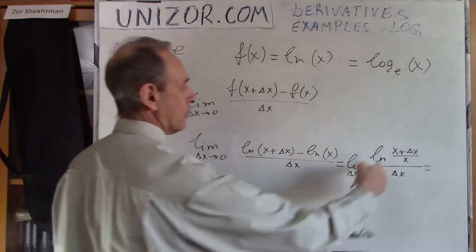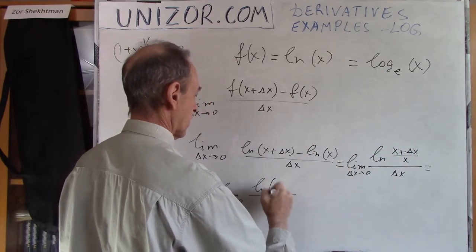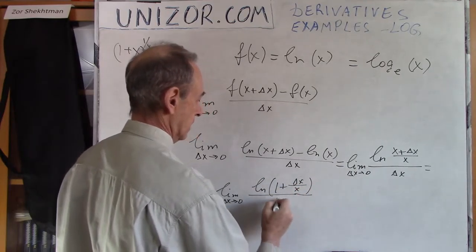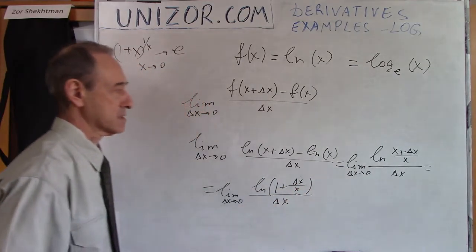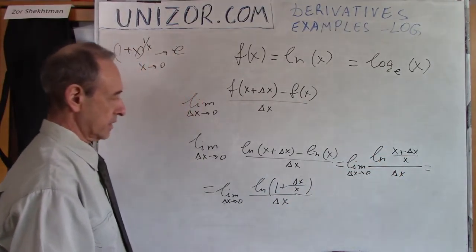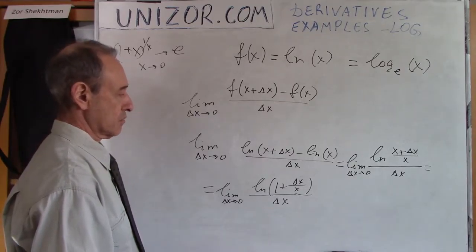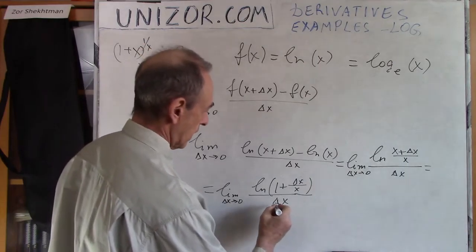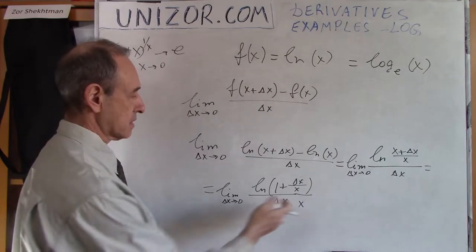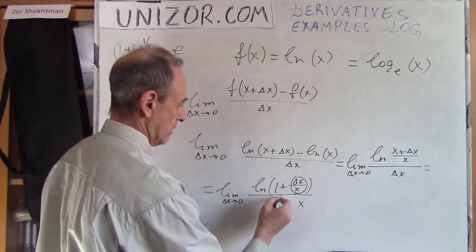I can obviously divide this to get logarithm of 1 plus delta x divided by x, and delta x here. That's the same thing. Now here is an interesting story. I will divide by x and multiply by x. x is a positive number, so basically nothing is changed here. And now consider this and this.